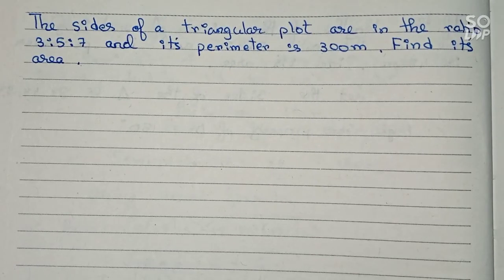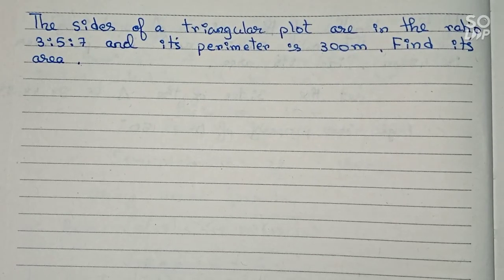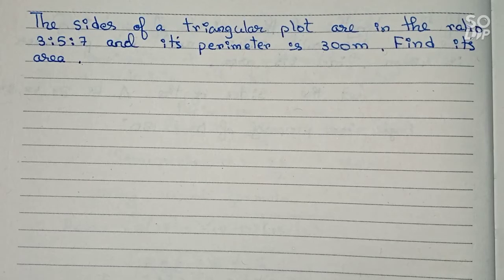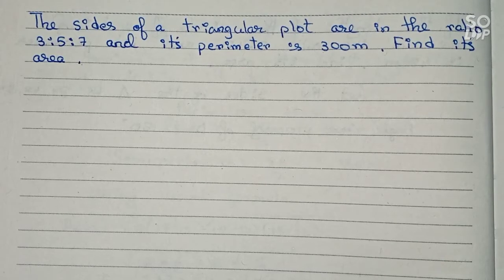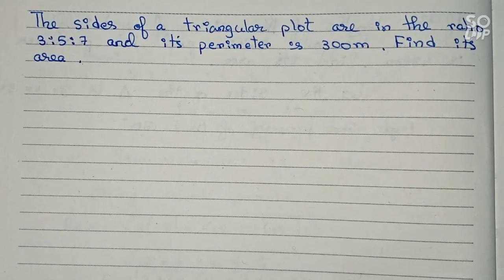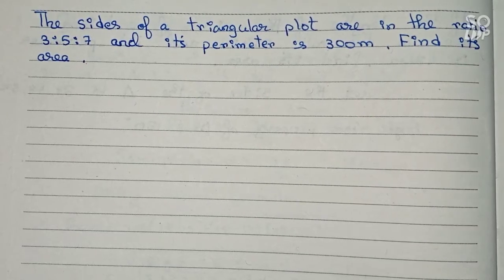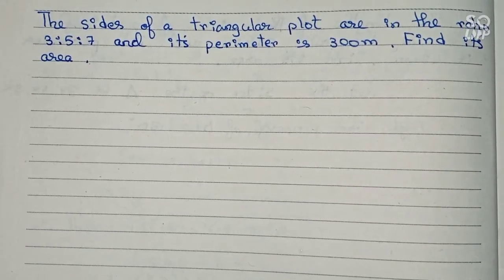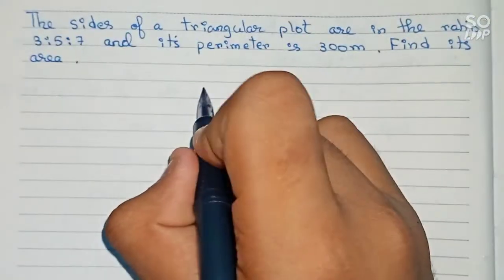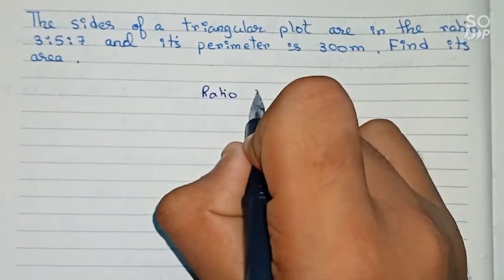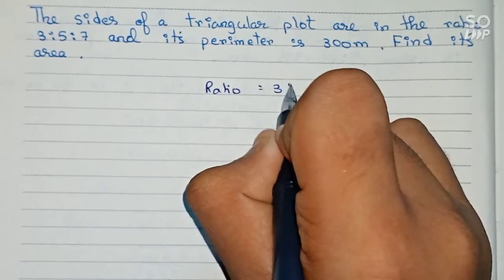Hello guys, welcome to this video. In this video our question is: the sides of a triangular plot are in a ratio 3:5:7 and its perimeter is 300 meters — find its area. So this is our question, let's solve it. In this question the ratios are provided, so ratio is 3:5:7.